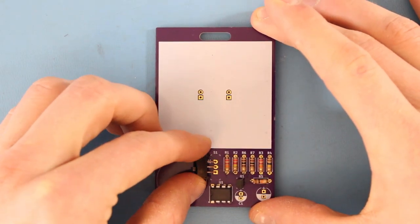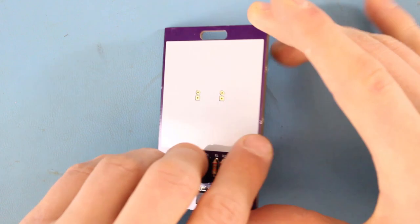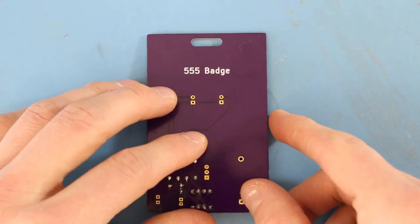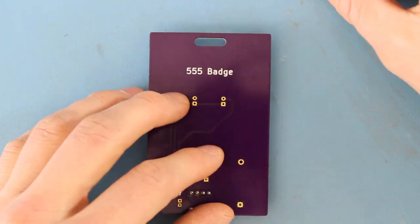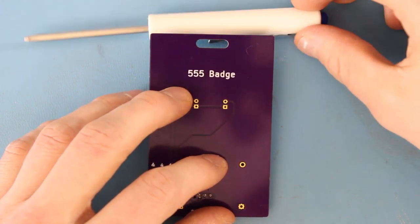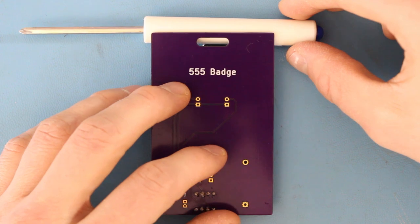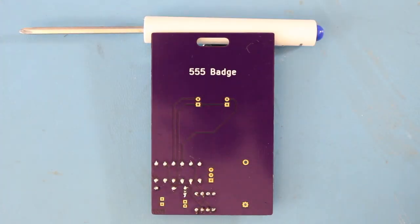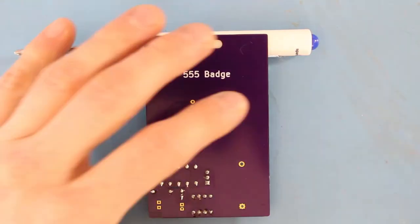Place the switch next. The orientation does not matter. Once again, you can rest the board on the switch to get at the leads. If necessary, you can also put a pen, pencil, screwdriver, or other object under the opposite side of the board to keep the board parallel to your work surface. Solder the leads and clip off the excess.